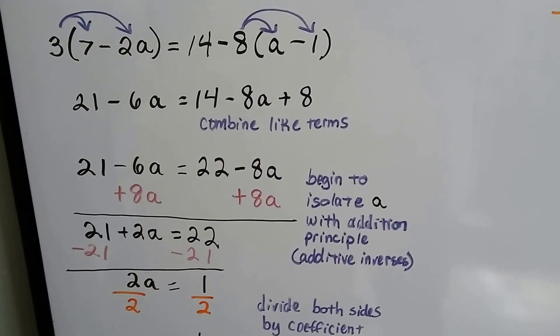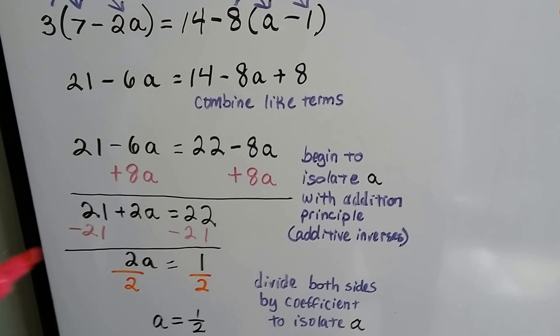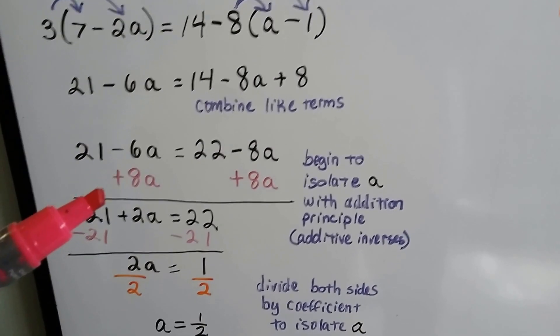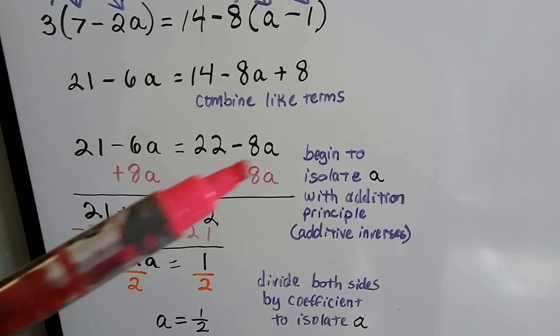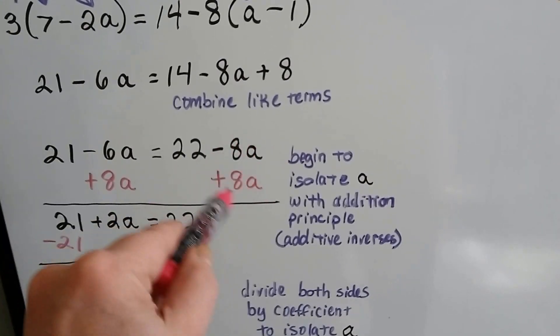We combine the like terms of the 14 and the 8, and we get a positive 22. We can start isolating the a by using the addition principle, which is the same thing as adding the inverse, and that creates a zero pair here. Negative 8a and positive 8a.